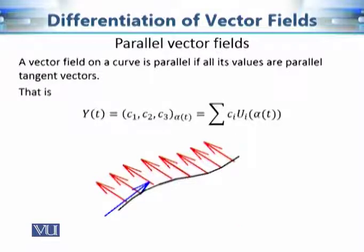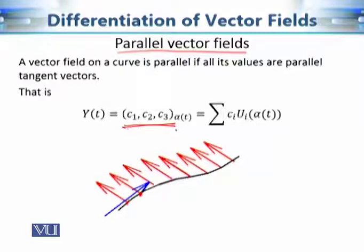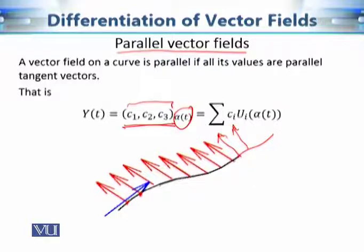A particular vector field of importance is the parallel vector field. If the vector part remains the same and only the point of application changes, we are translating the same vector along the curve. Since all vector parts are equal, all vectors are parallel. If the vector part is constant and can be written as cᵢ·uᵢ(alpha(t)), we say it is a parallel vector field.